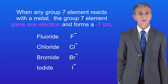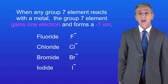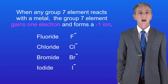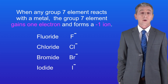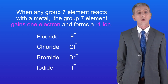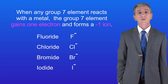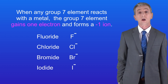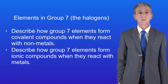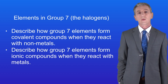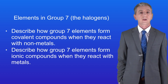You'll notice that when halogens form ions, the name changes slightly — they end in '-ide'. So fluorine becomes fluoride and chlorine becomes chloride. You'll find plenty of questions on the Group 7 halogens in the revision workbook linked above. Hopefully now you can describe how Group 7 elements form covalent compounds with non-metals, and how they form ionic compounds when they react with metals.